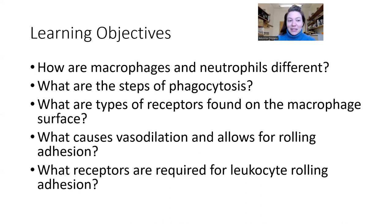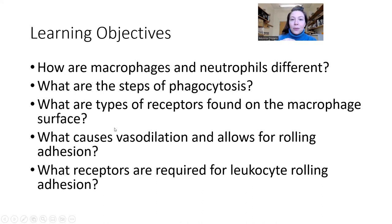If you remember from a previous lecture, which of these is more likely to be present in your blood? And it's 'never let monkeys eat bananas,' so it's neutrophils. We're going to talk about how macrophages fight pathogens — that's called phagocytosis or cell eating. And then we're going to talk about what is actually on the outside of macrophages that allows it to detect pathogens like fungus and bacteria.